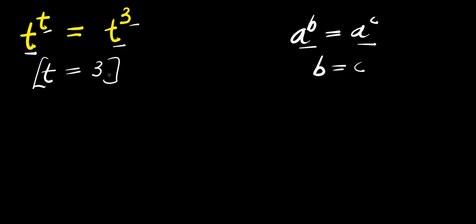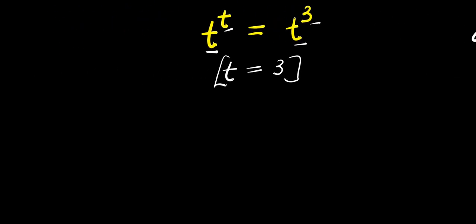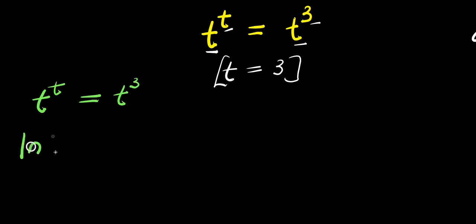This becomes one of the solutions, but there are other solutions, so we can solve this using another method. If you have t to the power t equals t to the power 3, I can take the natural log: I have ln of t to the power t, and this equals ln of t to the power 3.